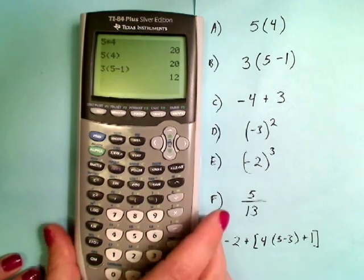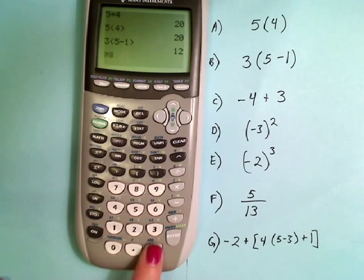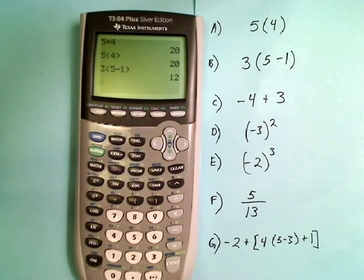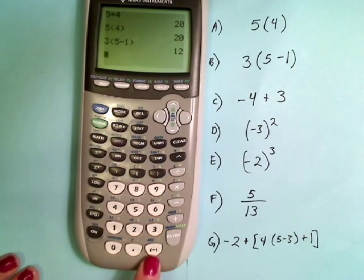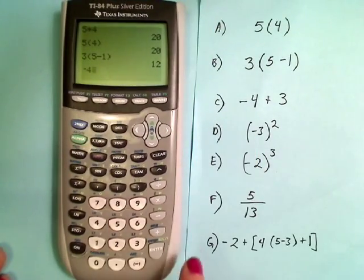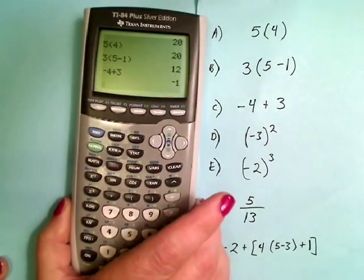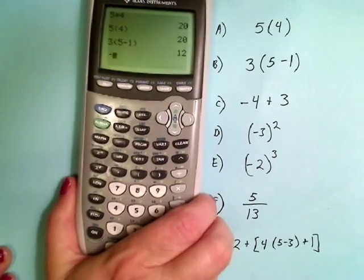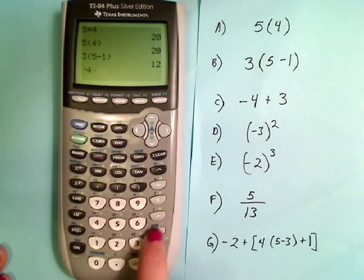All right, so here we have -4 + 3. One thing that's really important to remember is that the minus sign is not what we use for negative numbers. Down here, in the bottom row of buttons, we have a negative sign in parentheses. And that's what we use to make a negative number like this -4.